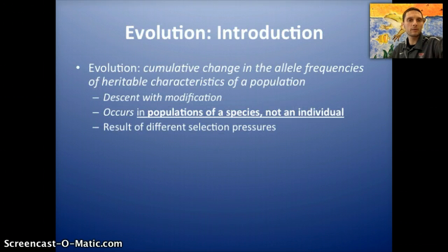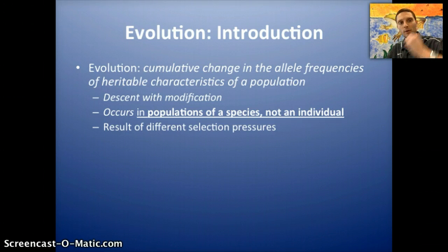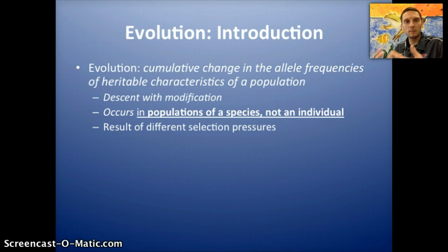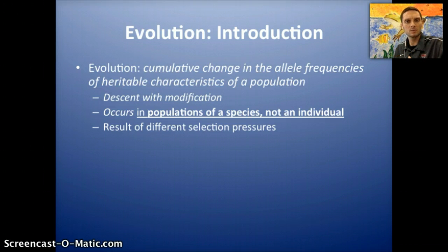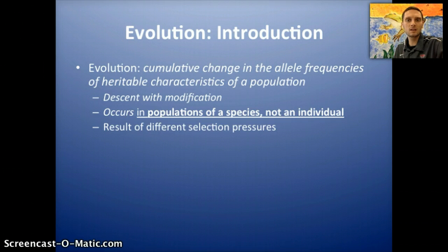To begin, we'll have a quick review. Biological evolution is simply the cumulative change in the allele frequencies of heritable characteristics of a population. So you have a population, and for whatever reason, maybe there's some sort of environmental change, or some of those individuals move to a different area, or there's some different environmental factors.